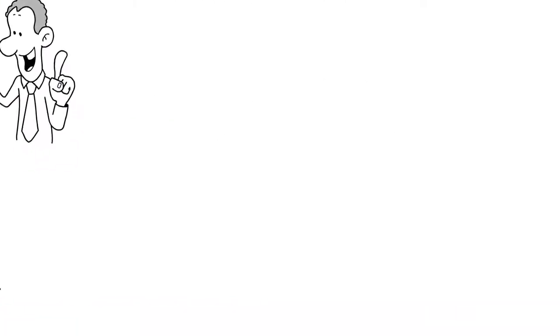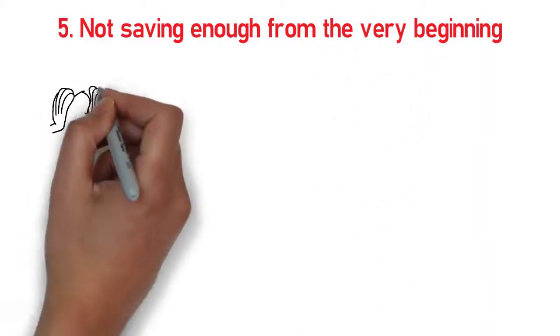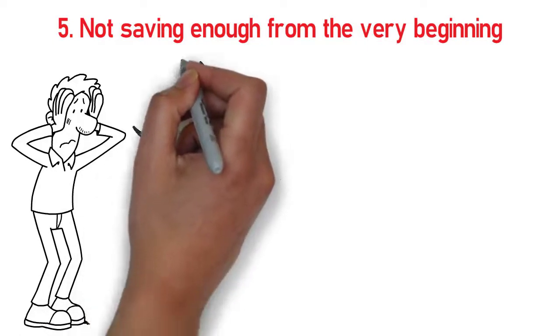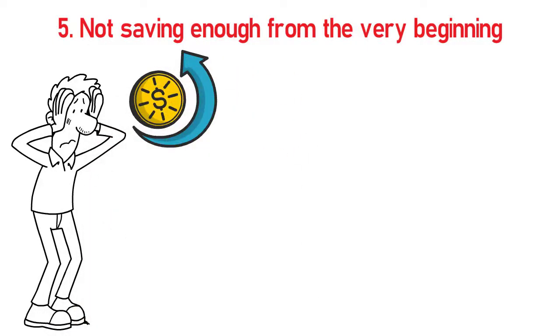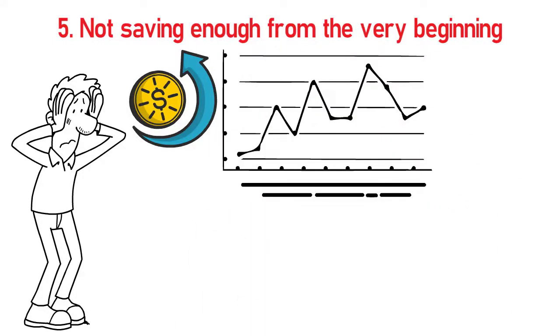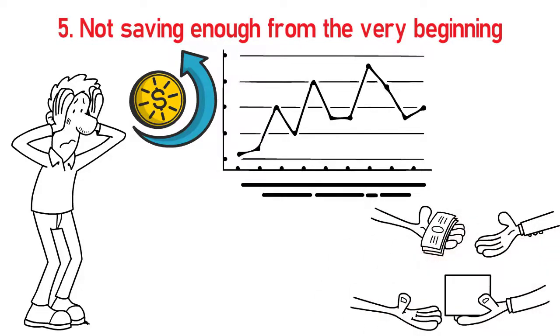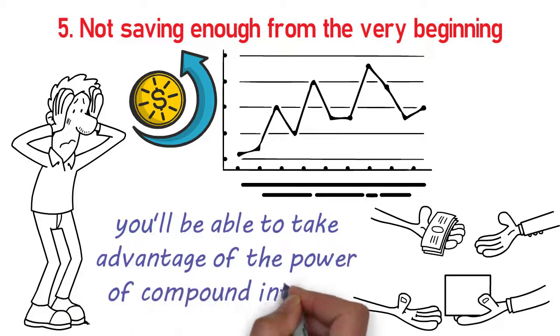And number five is not saving enough from the very beginning. If you start out behind the ball, it can be hard to catch up. That's because compound interest is one of the most powerful tools in your financial toolbox, but it only works when you let your money grow. By starting out with small contributions and then increasing your savings as time goes on, you'll be able to take advantage of the power of compound interest.